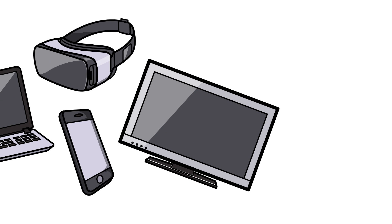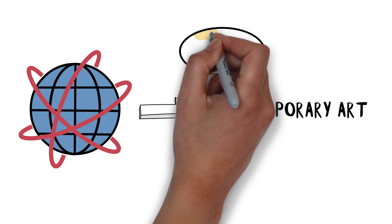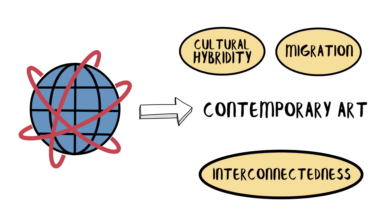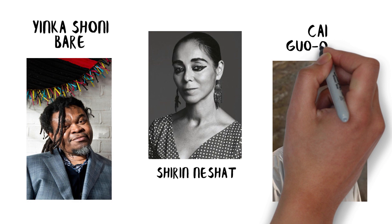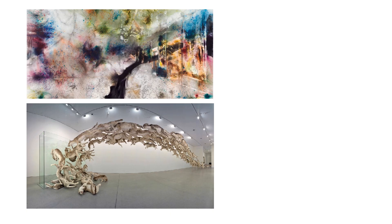Globalism has had a significant influence on contemporary art, as artists engage with themes of cultural hybridity, migration, and interconnectedness. Artists like Yinka Shonibare, Shirin Neshat, and Cai Guo-Qiang explore their complex cultural identities and address issues of globalization, trans-cultural exchange, and the impact of global politics and economics on local communities. Contemporary art reflects the diverse and interconnected world we live in, fostering dialogue and understanding across different cultures and perspectives.